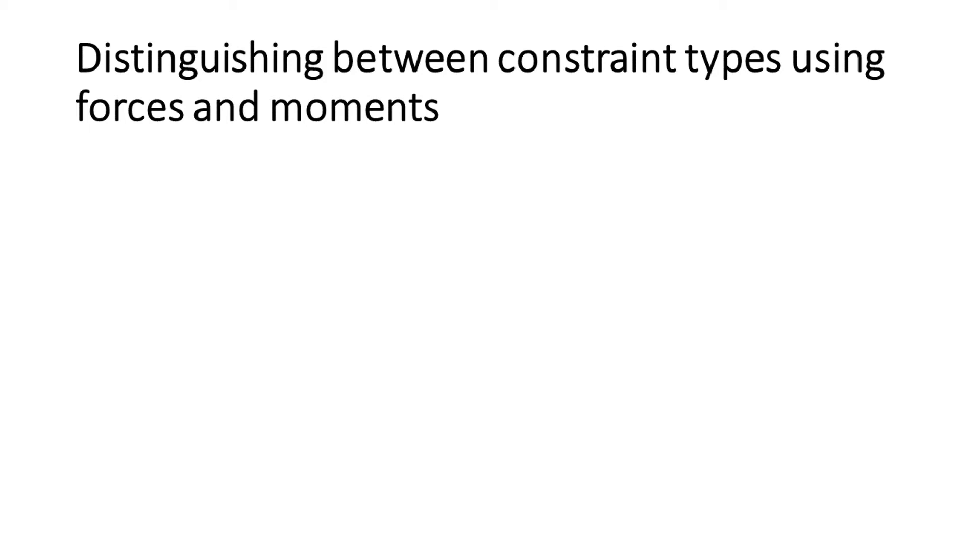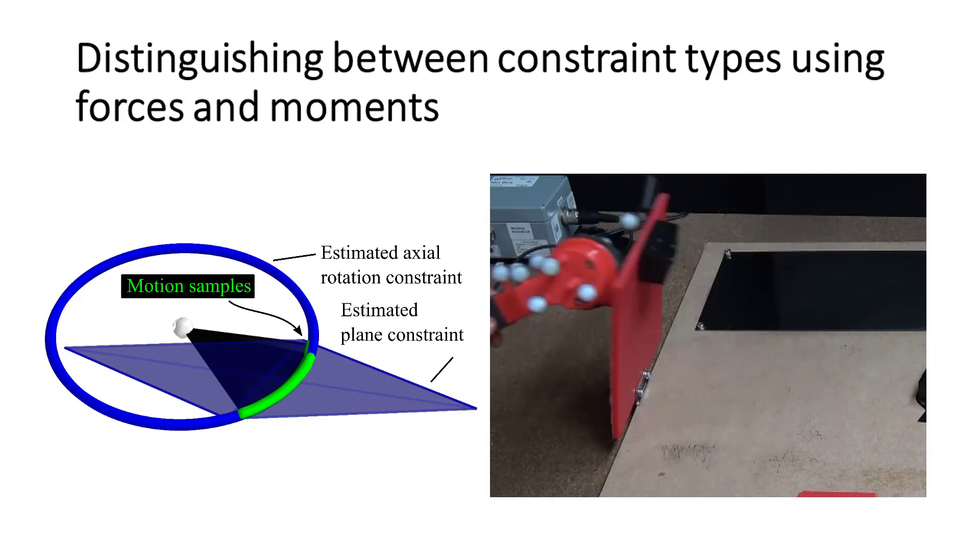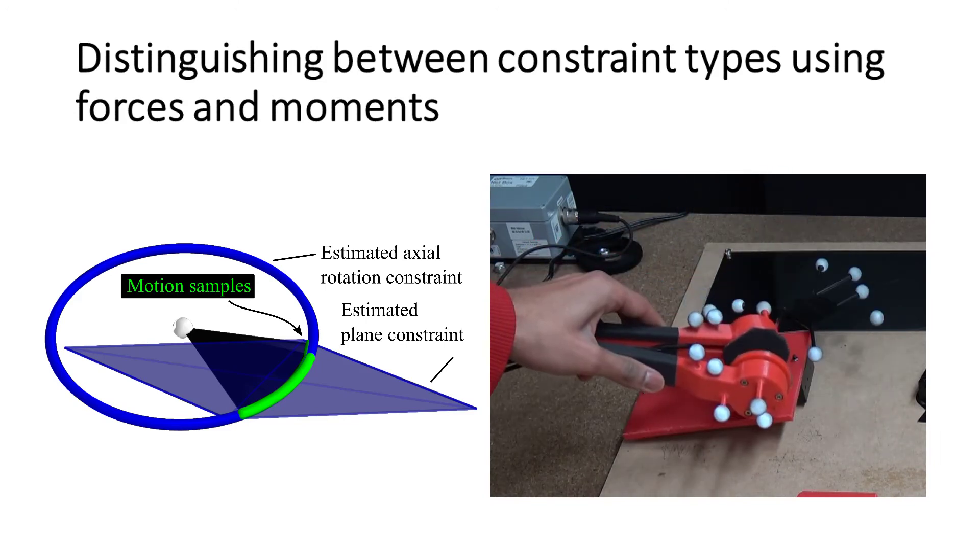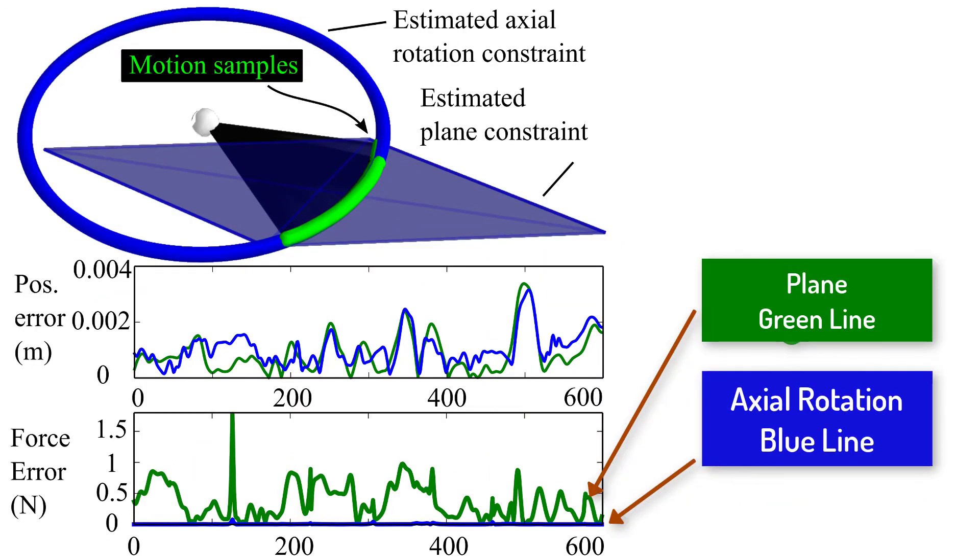Sometimes kinematic information alone is insufficient to determine the constraint type. For example, the axial rotation constraint shown has trajectories that could fit a planar motion constraint too. The axial rotation constraint has different forces when compared to the planar motion constraint and thus our method can distinguish between them.